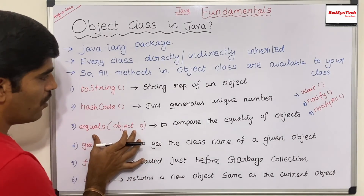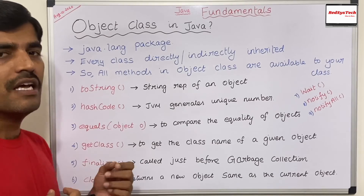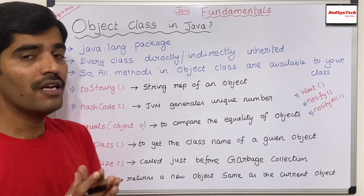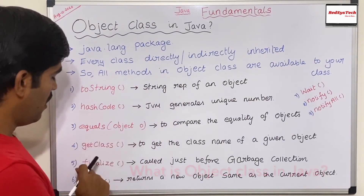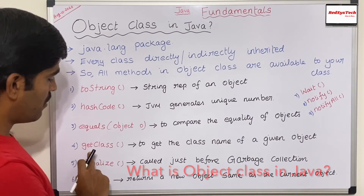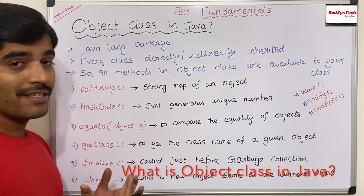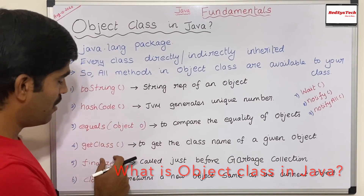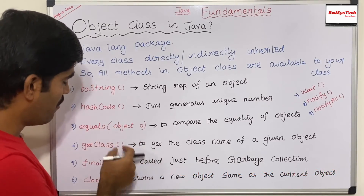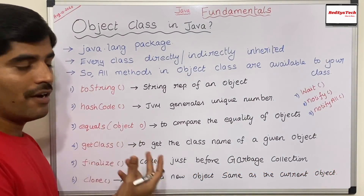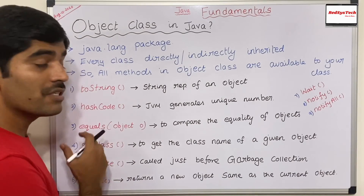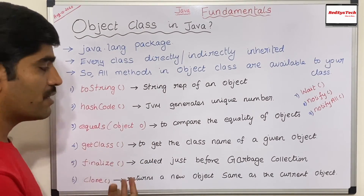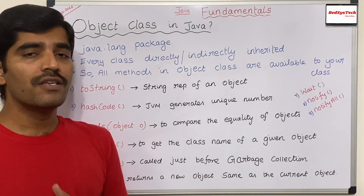The equals method can be called to compare two objects — for example, if I'm creating two objects and want to check whether they are the same. Similarly, there is a getClass method. By the name itself, we can understand it is used to get the class name of a particular object.